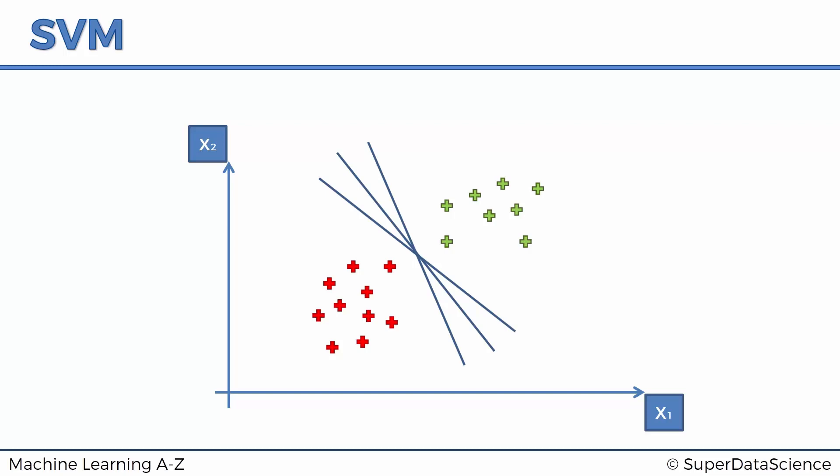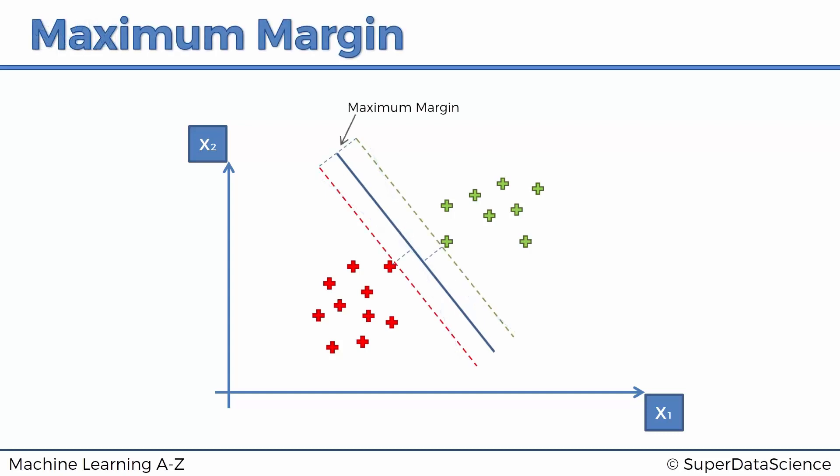The line is searched through the maximum margin. This is the line an SVM would draw. It separates these two classes of points and has the maximum margin, which means this distance. This line is drawn equidistant from this point and this point, and that margin, the sum of these two distances, has to be maximized in order for this line to be the result of the SVM.